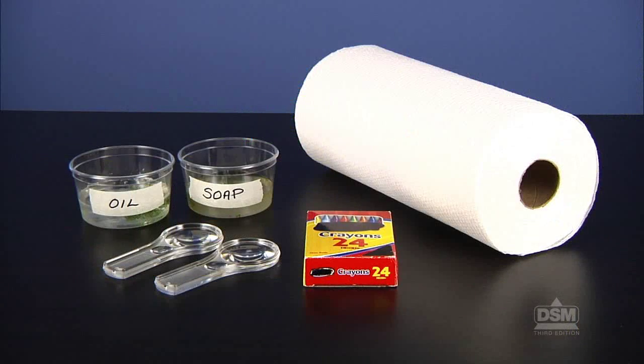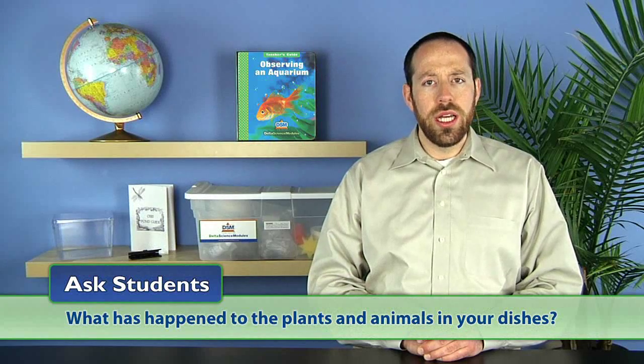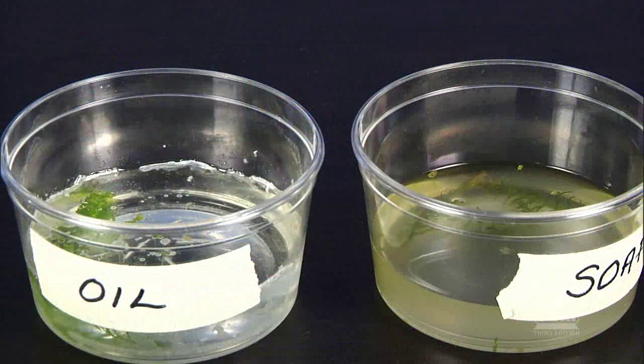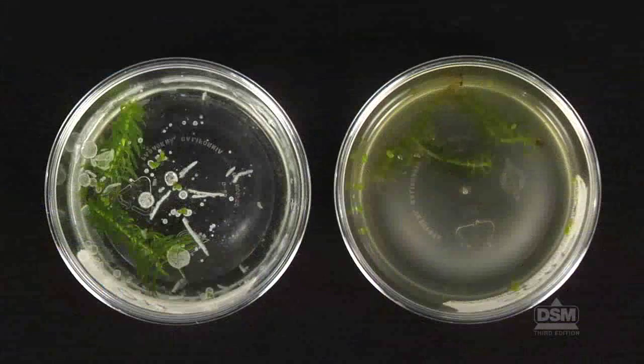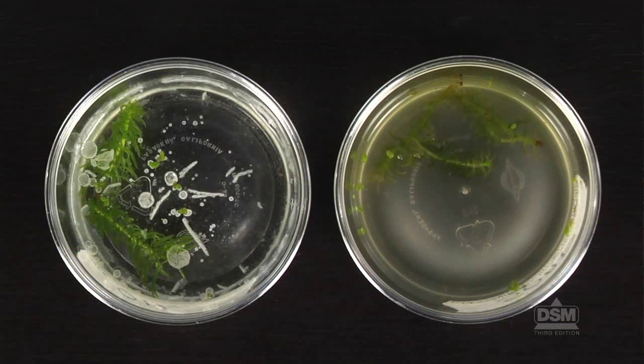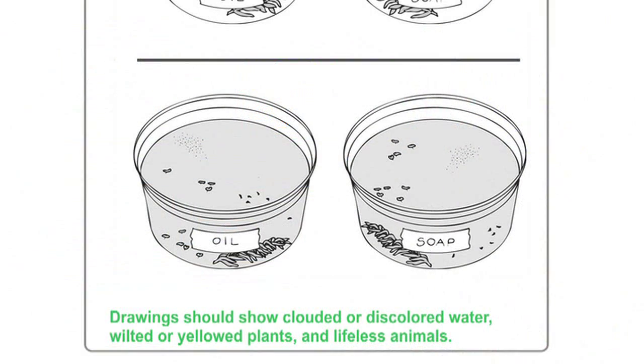To begin session two, return Activity Sheet 11 to students and distribute the materials to each team. Then ask, what has happened to the plants and animals in your dishes? There should be an oily coating on the plants in one dish and a filmy coating on the plants in the other. In both dishes, the plants have wilted, perhaps turned yellow and died. The Daphnia may also be dead. Have students draw what they see in their dishes at the bottom of Activity Sheet 11.